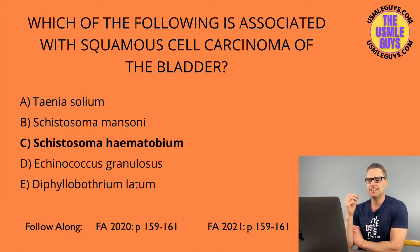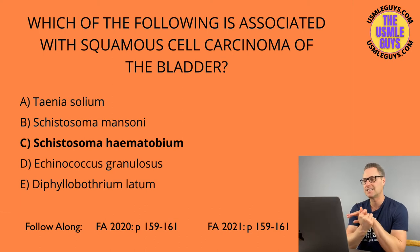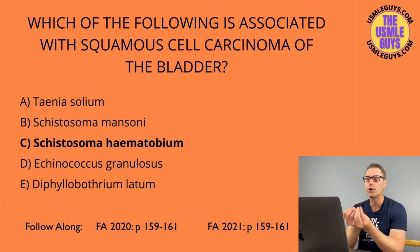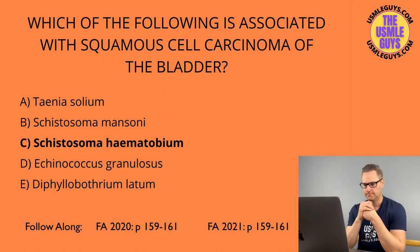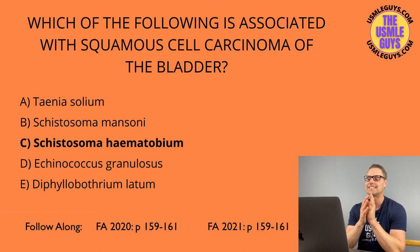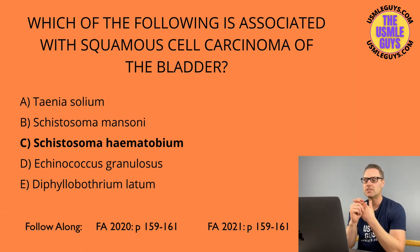The correct answer is Enterobius. Question two: which worm is associated with seizures and cysts in the brain? Correct answer is Taenia solium — transmitted by ingesting larvae encysted in undercooked pork. Question three: liver cysts. The answer is Echinococcus granulosus, transmitted by ingesting eggs in food contaminated with dog feces. Question four: hematuria, squamous cell carcinoma of the bladder, and pulmonary hypertension.